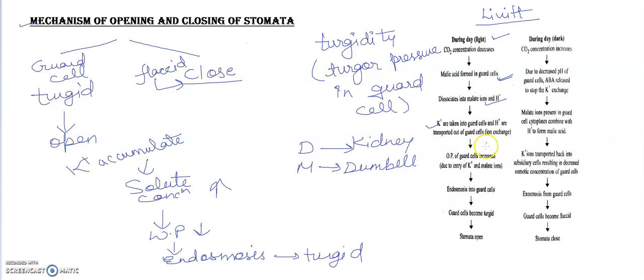Jaise aapne flowchart pe dekh sakte hain. Dekho, potassium ions are taken into the guard cell and hydrogen are transported out of the guard cell. This is the ion exchange theory. And here osmotic pressure, OP stands for osmotic pressure of the guard cell increases due to the entry of potassium and malate ions.